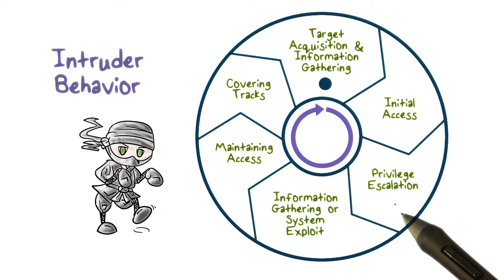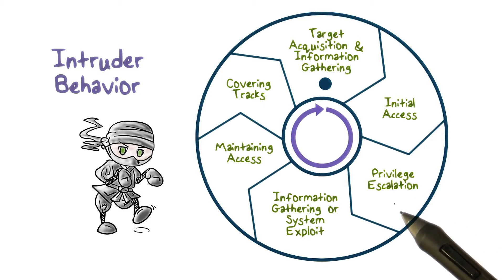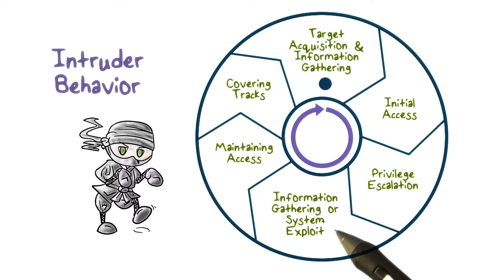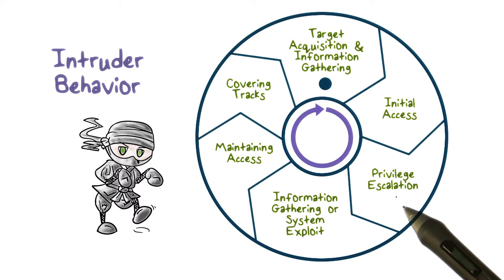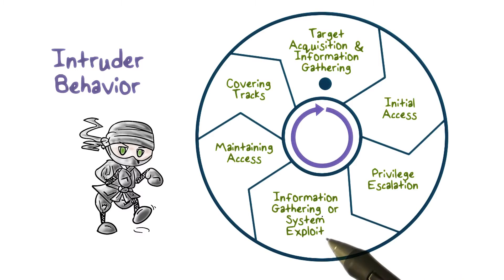The fourth step is information gathering or system exploit. After an attacker has gained sufficient privilege on a system, he can then find out more about the network and the organization, and even move to another target system to further the exploit on the network.